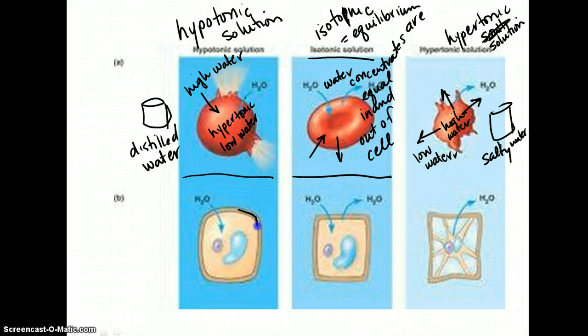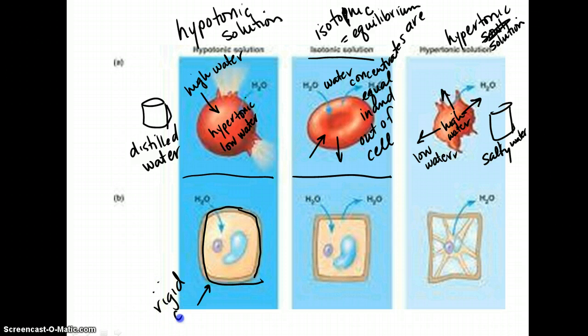Plant cells have that cell wall, and the cell wall is really rigid, as we know. So here we have our rigid cell wall.